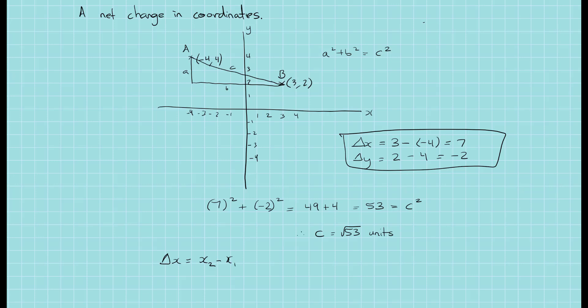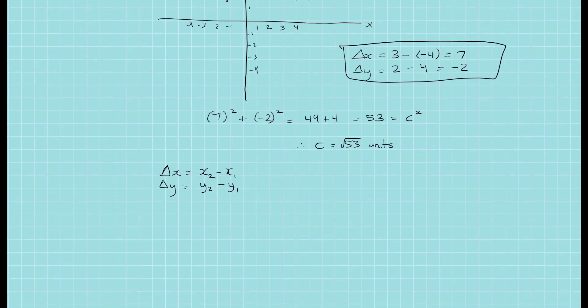Delta y is similar, but for the y-coordinate, it will be the destination y-coordinates and the point of origination y-coordinate. So we can use these two in the formula for Pythagoras theorem.